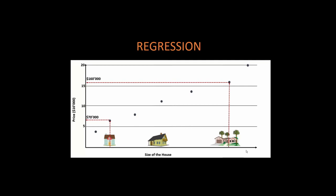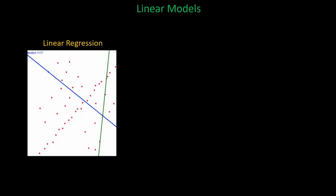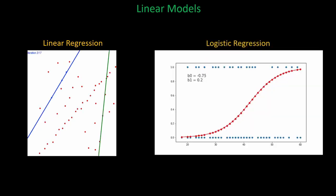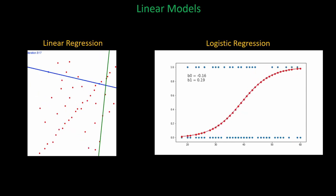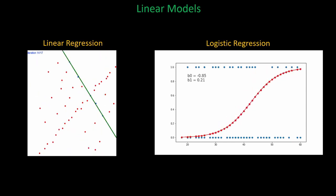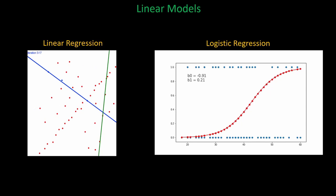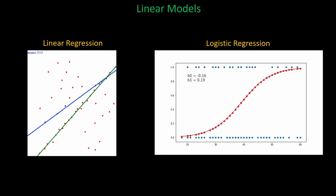We've talked about the size of houses versus the price of houses and our ability to predict house prices based on size. In regression we have a couple of different ways of doing this. We have linear regression, which we're going to spend the majority of our time talking about today, and we have logistic regression. Logistic regression really falls under the domain of zero or one and doesn't allow us to shape our line slope in the same way.